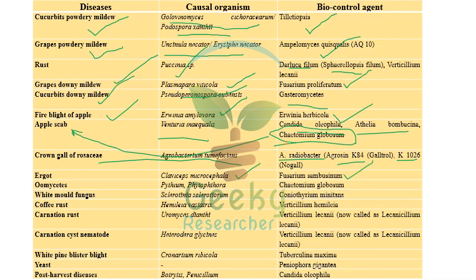For Oomycetes such as Pythium and Phytophthora, Chaetomium globosum is a very important biocontrol agent — questions may ask which biocontrol agent is specific for the Oomycetes group of fungi, and the answer is Chaetomium globosum. For white mold fungus, the biocontrol agent is Coniothyrium minitans, which is also very important.